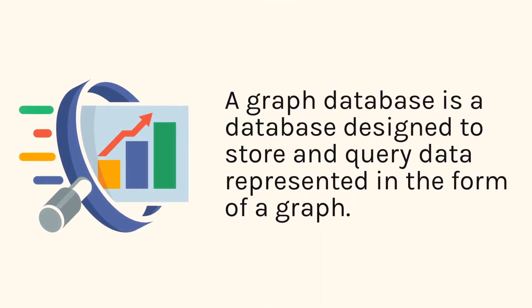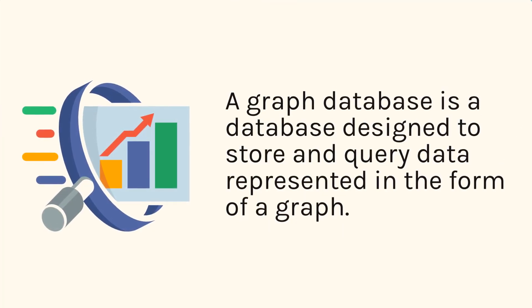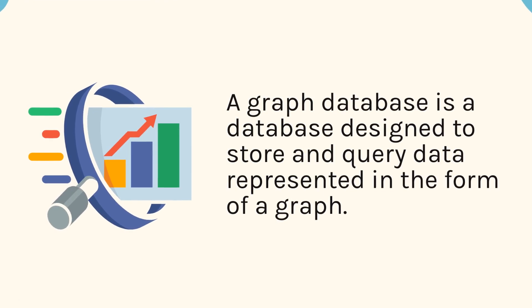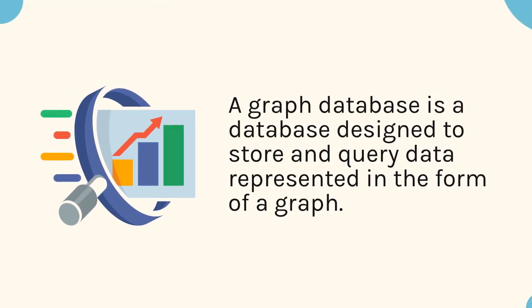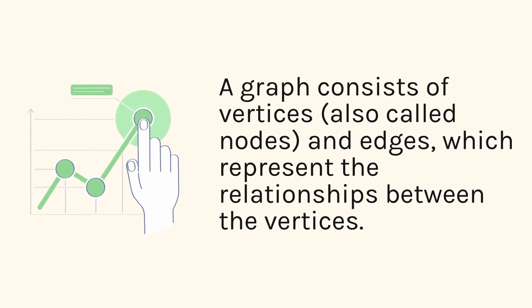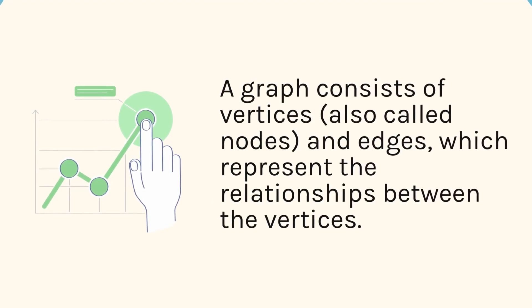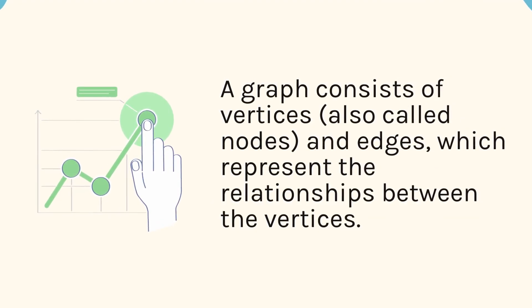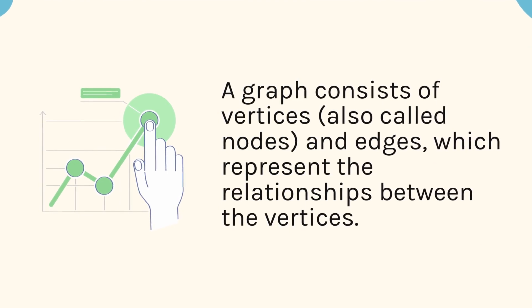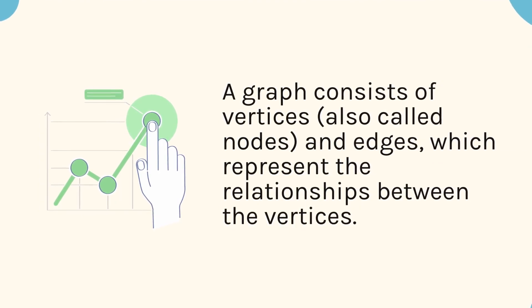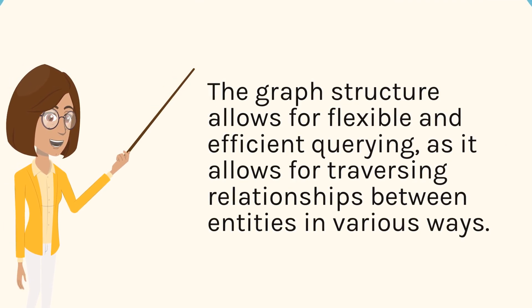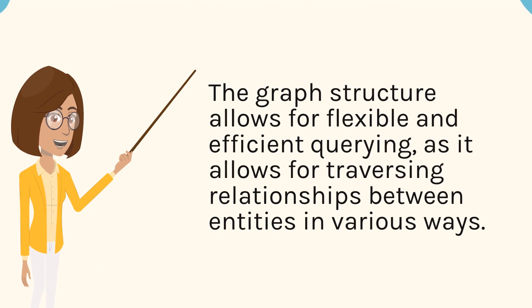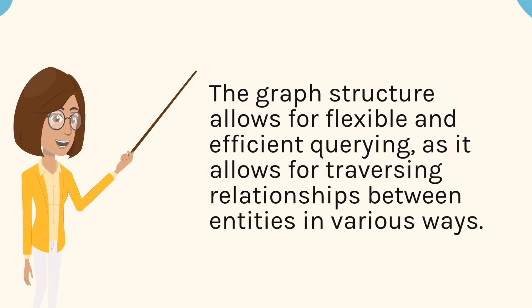A graph database is a database designed to store and query data represented in the form of a graph. A graph consists of vertices, also called nodes, and edges, which represent the relationships between the vertices. The graph structure allows for flexible and efficient querying, as it allows for traversing relationships between entities in various ways.